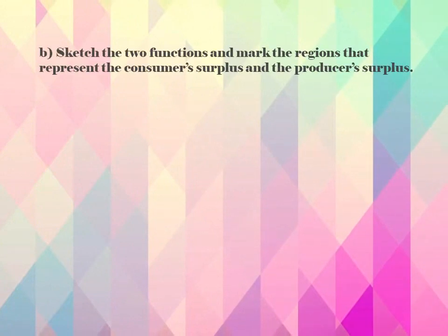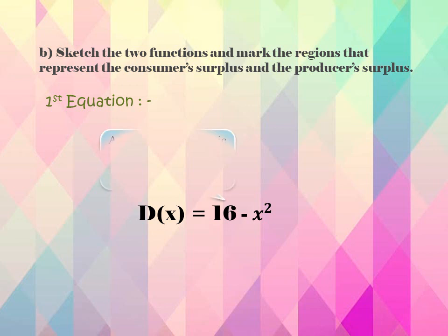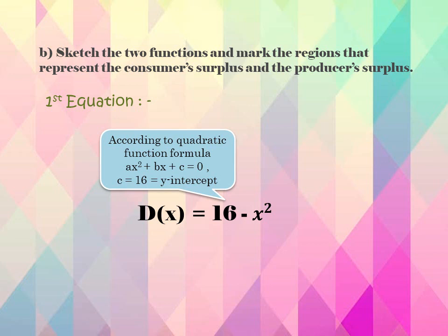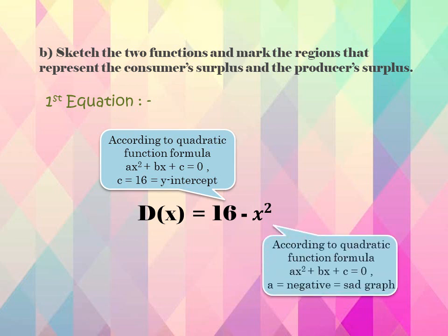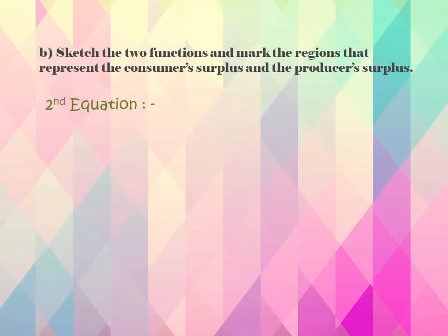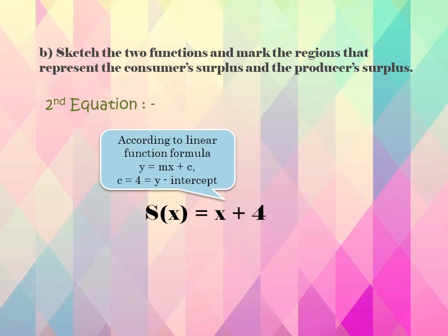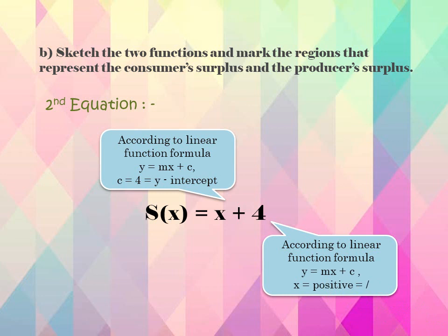Part B: sketch the two functions and mark the regions representing consumer surplus and producer surplus. For the first equation, DX equals 16 minus X squared. According to the quadratic function formula AX squared plus BX plus C, C equals 16, so 16 is the Y-intercept. Since A equals negative, the negative value represents a downward-opening curve. For the second equation SX equals X plus 4, according to the linear function formula Y equals MX plus C, C equals 4, so 4 is the Y-intercept. Since the coefficient of X is positive, the graph looks upwards from left to right.